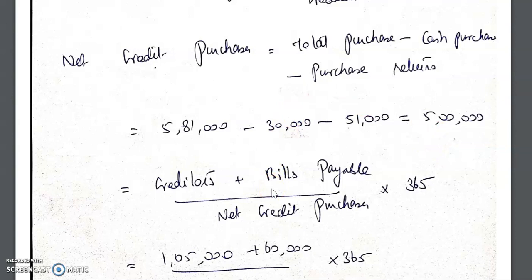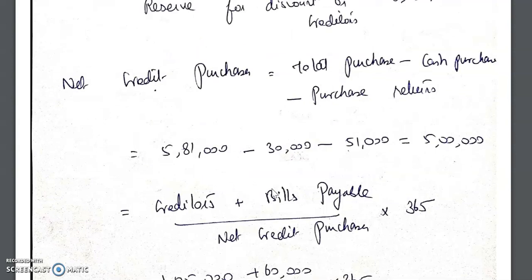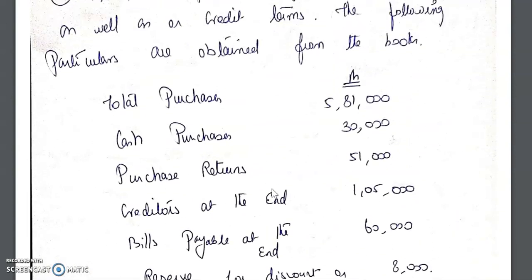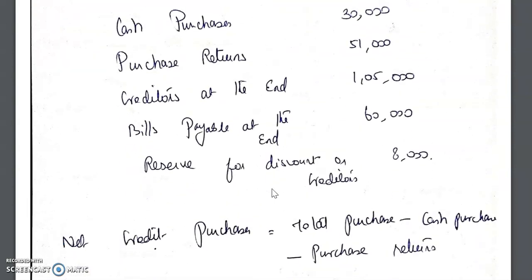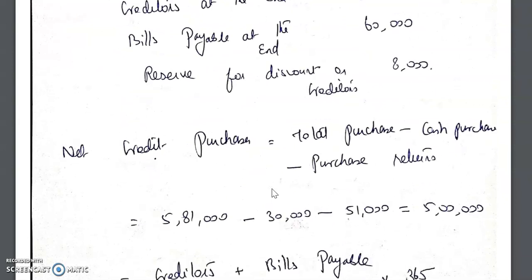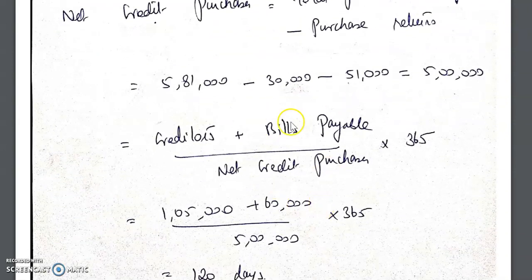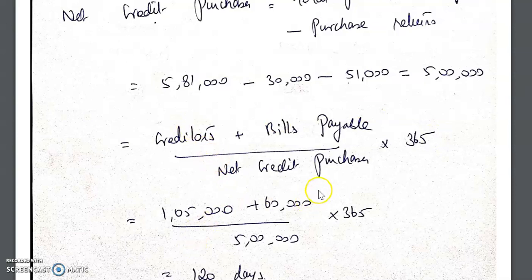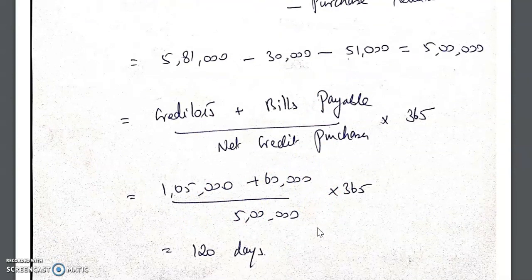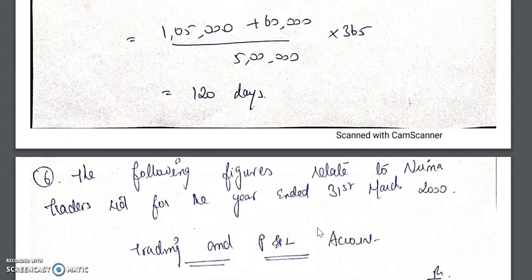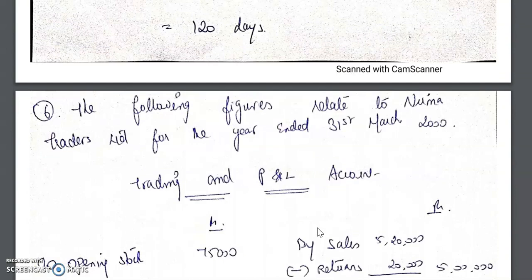This sum is about the average payment period. The formula is: average payment period = (creditors + bills payable) divided by net credit purchases, multiplied by number of working days. If the number of working days is not mentioned, take 365 or 360 days. So: (1,05,000 + 60,000) divided by 5,00,000 multiplied by 365 = approximately 120 days.